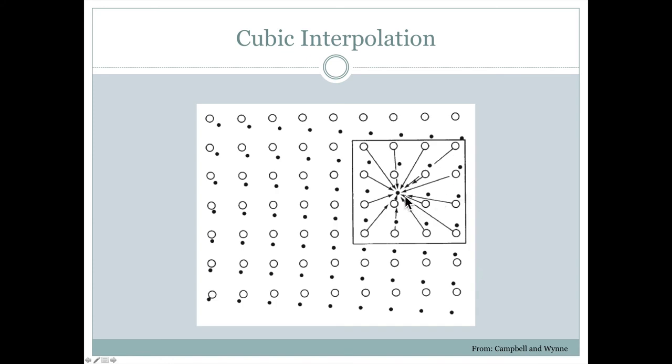And the way that that would look here is the same sort of idea. It would just be all of the pixels within a certain distance. Their values are considered when the value of this new pixel, this black dot here, is being assigned. So this would be an example of a cubic interpolation. It is going to give the smoothest looking results because it's accounting for the largest neighborhood around that pixel in order to determine what the value of that new pixel location should be.